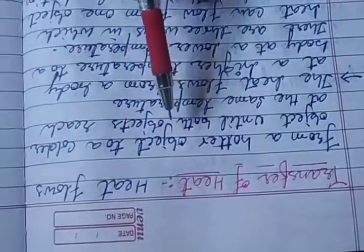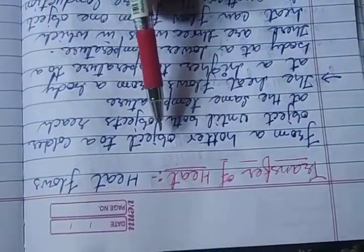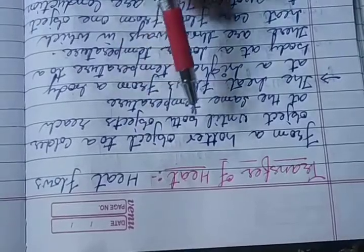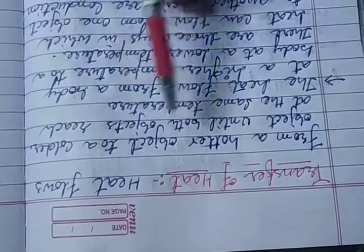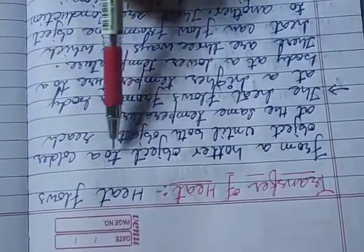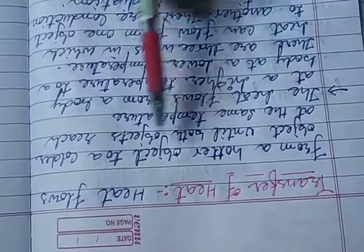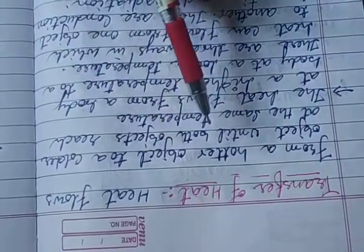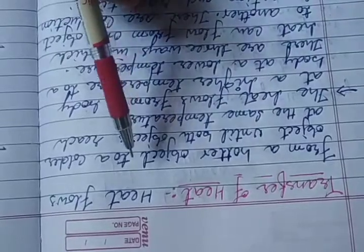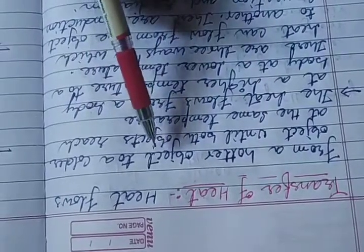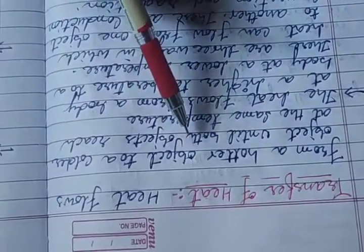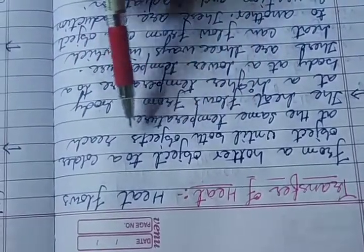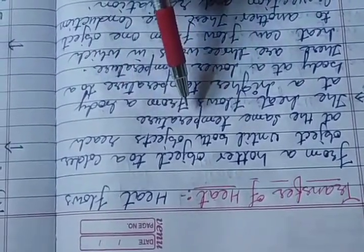Transfer of Heat. Heat flows from a hotter object to a colder object. Heat is transferred until both objects reach the same temperature.